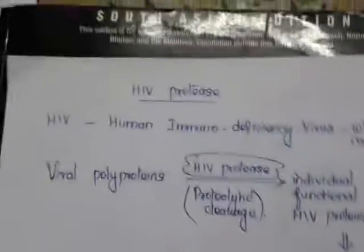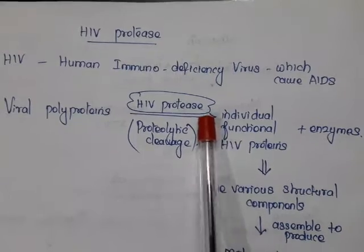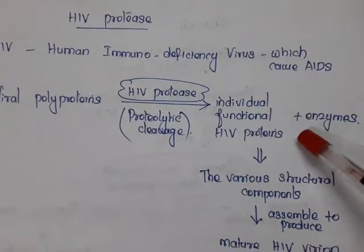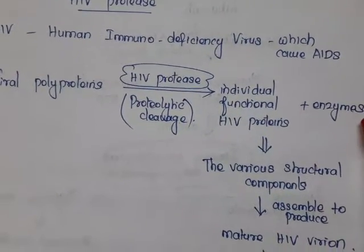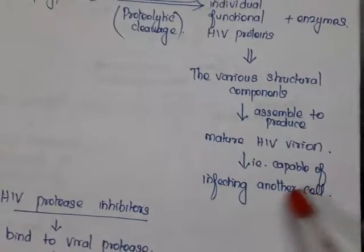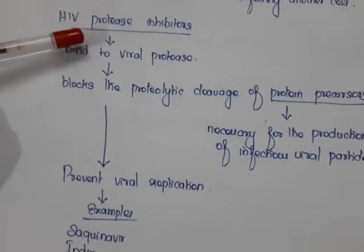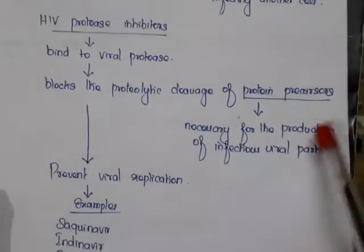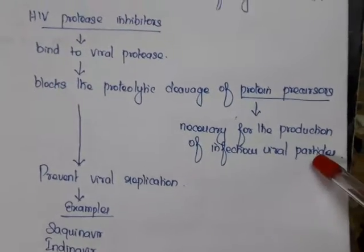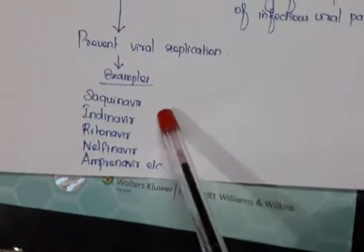Now we look at HIV protease inhibitors. HIV (human immunodeficiency virus) causes AIDS. HIV protease is an enzyme that converts viral polyproteins into individual functional HIV proteins and enzymes by proteolytic cleavage, allowing assembly of mature HIV virions capable of infecting another cell. HIV protease inhibitors bind to the HIV protease enzyme, blocking proteolytic cleavage of protein precursors necessary for infectious viral particles, thereby preventing viral replication.